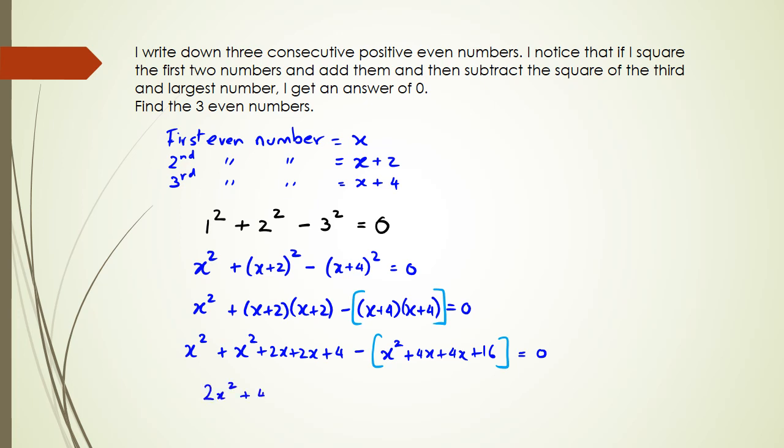Then I have plus four x plus four, and then inside the blue bracket, I'm going to simplify this to be x squared plus eight x plus 16, and all of this is still equal to zero.